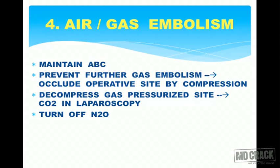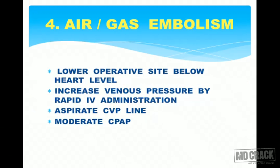Turn off nitrous oxide if it is being used for maintenance of anesthesia. Lower the operative side below the heart level. Increase venous pressure by rapid IV administration, and try to aspirate the CVP line so that any gas present inside the central vein can be removed. Moderate CPAP is then employed for ventilation of the patient.